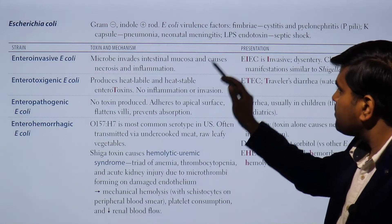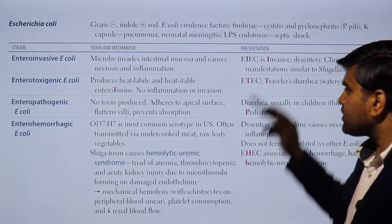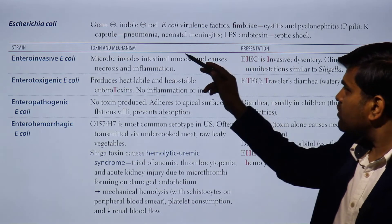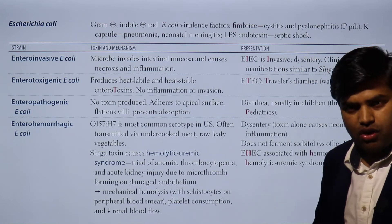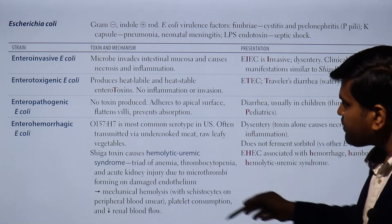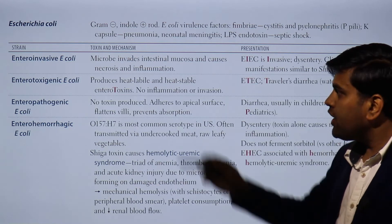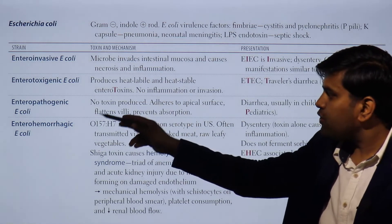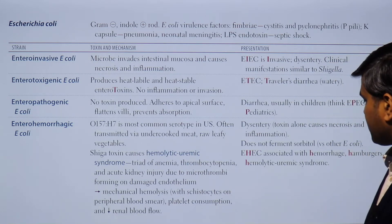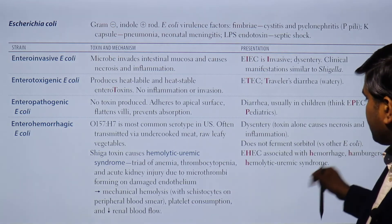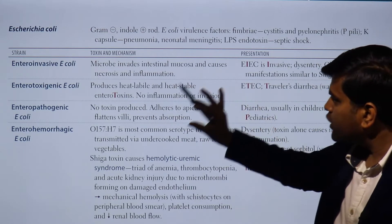E. coli is a gram-negative, indole-positive rod. Its virulence factors include fimbriae/pili responsible for urinary tract infection — cystitis and pyelonephritis — a capsule causing pneumonia and meningitis, and LPS endotoxin causing septic shock. E. coli also has exotoxins. There are actually five types of E. coli: enteroinvasive, enterotoxigenic, enteropathogenic, enterohemorrhagic, and enteroaggregative.